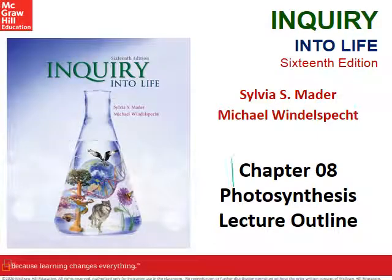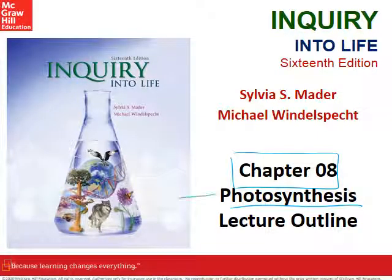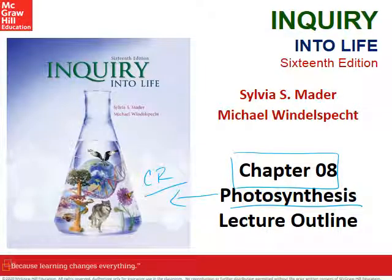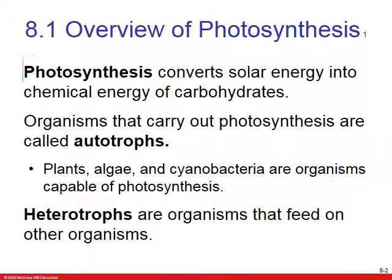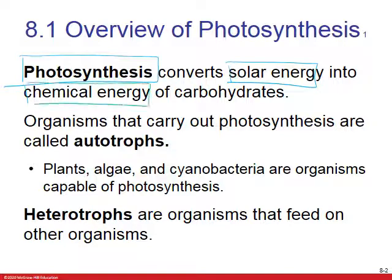Hi, welcome to chapter 8. We're going to talk about photosynthesis and you're going to see a lot of similarities between chapter 7 cellular respiration and this chapter. A basic definition of photosynthesis is converting solar energy into chemical energy. Plants take sunlight and they turn it into chemical energy in the bonds of carbohydrates.